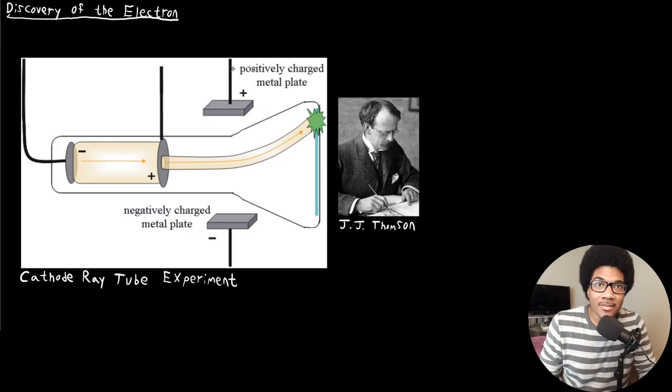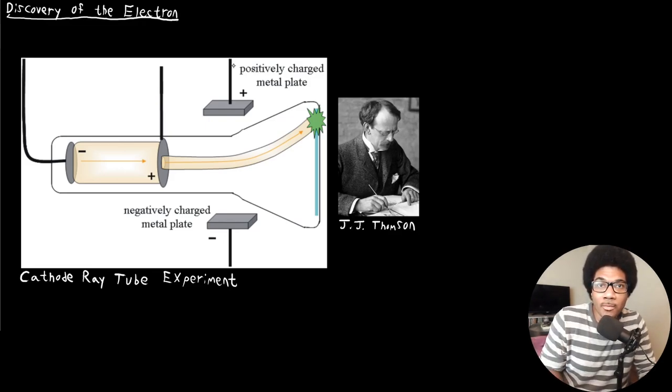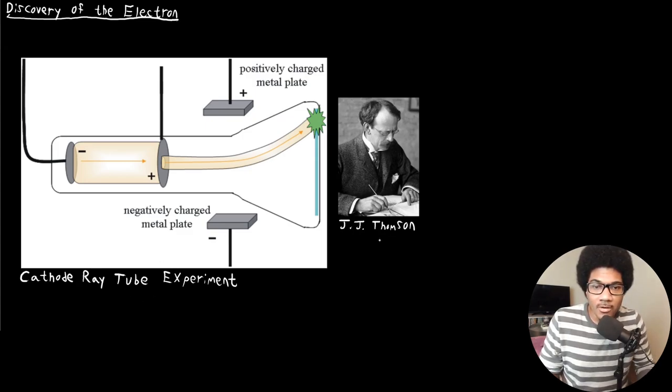At this point in the late 1800s, it was very much understood that we had to go beyond that elementary understanding of the atom if we were going to be able to explain what was going on with different elements and how they were composed and what gave them their different properties. So the discovery of the electron centers around this experiment called the cathode ray tube experiment done by this gentleman, J.J. Thompson, a late 1800s physicist.